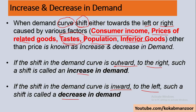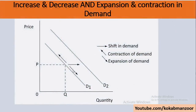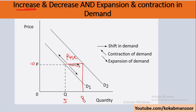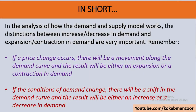Increase in demand means moving from D1 to D2 — a shift towards the right. When the curve shifts outward or rightward, it is an increase in demand. Vice versa is a decrease in demand. Contraction is movement along the same curve: moving downward is expansion, moving upward is contraction.